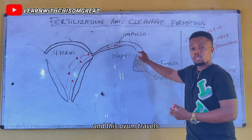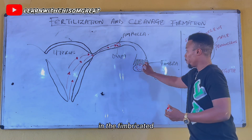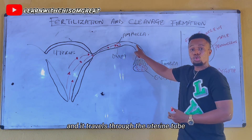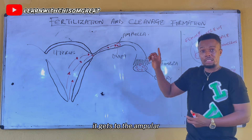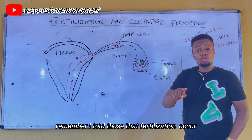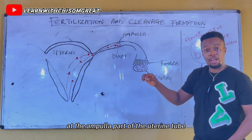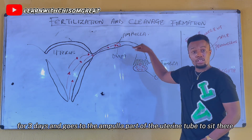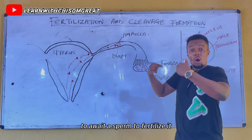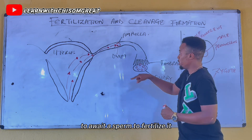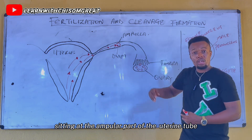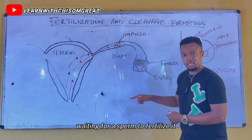This ovum travels and gets trapped in the fimbriated part of the uterine tube, then travels through the uterine tube. For three days, it gets to the ampulla — remember, fertilization occurs at the ampulla part of the uterine tube. So it travels for three days to the ampulla part of the uterine tube to await a sperm to fertilize it.